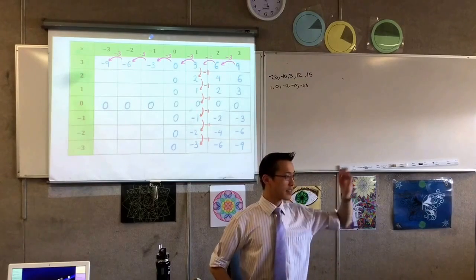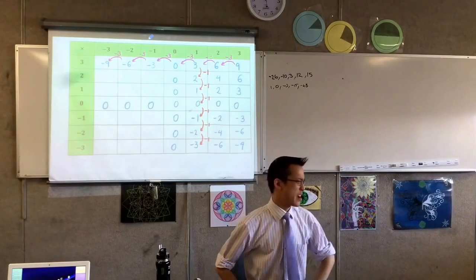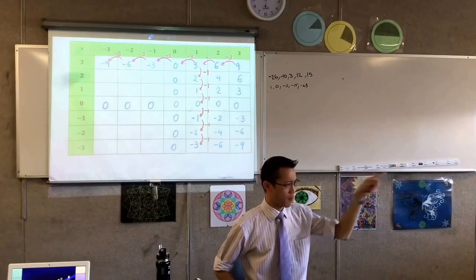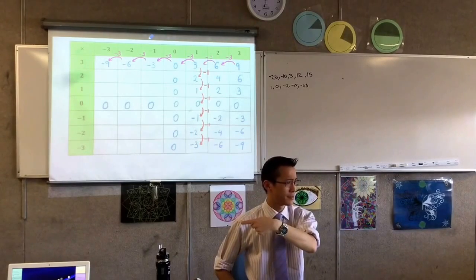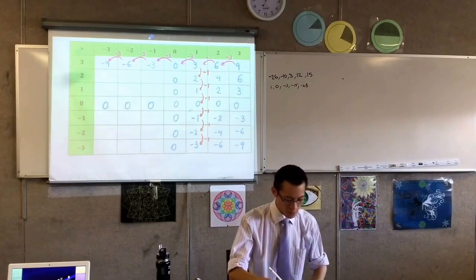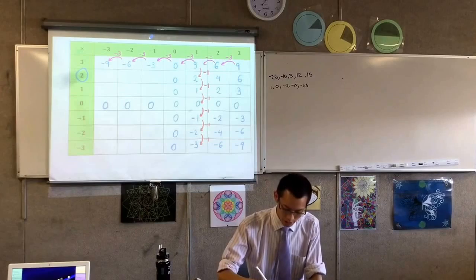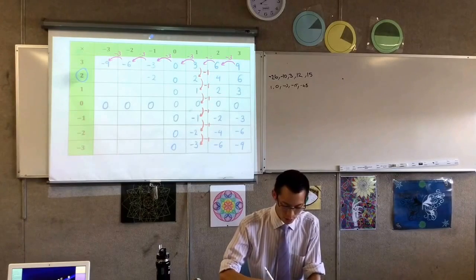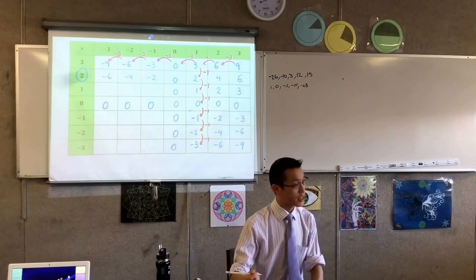I'm following the pattern, right? So when I look at this second row, I'm not taking away three every time as I go from right to left. What am I taking away? Two, right? And that's because I'm in the two row. So I'm going to complete here. Take away two, take away four, take away six.